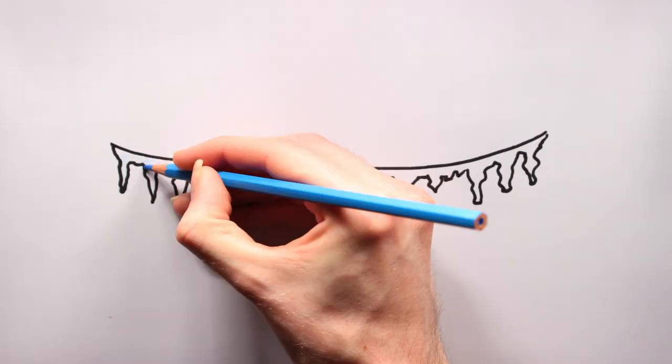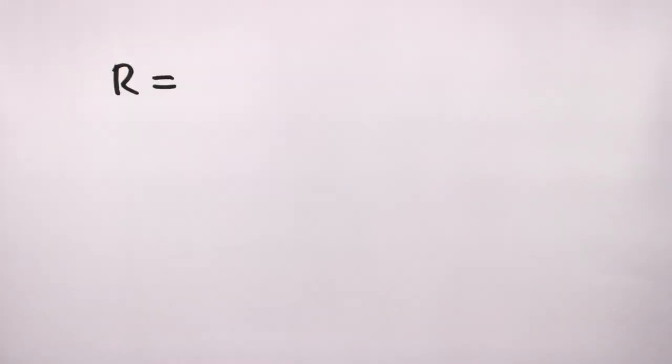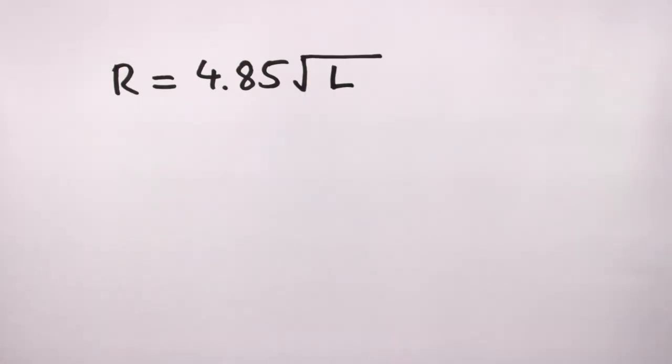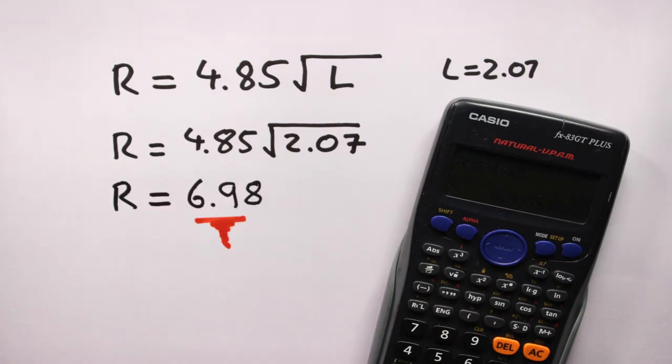Now let's find the frost line. Its location in AU will be given by r = 4.8 × √L. Here, L is the luminosity of our star, which we have already set at 2.07. Again, crunch the numbers, and we get a frost line at 6.98 AU.